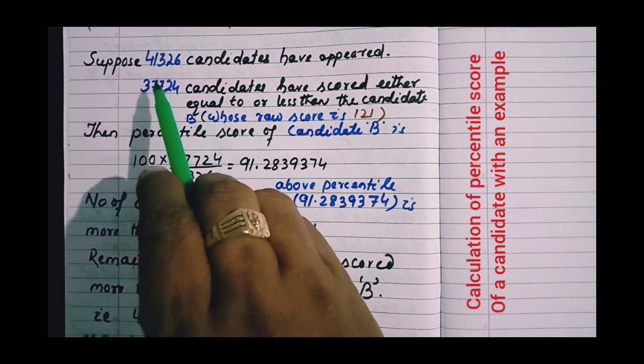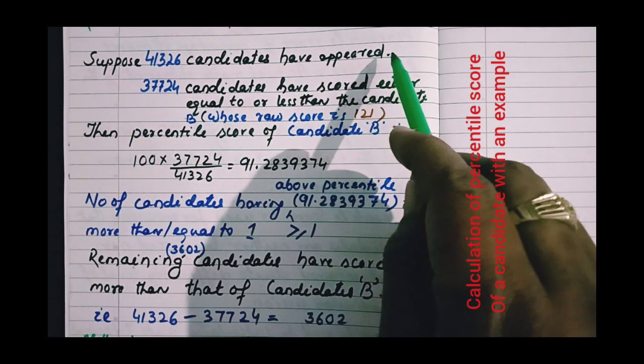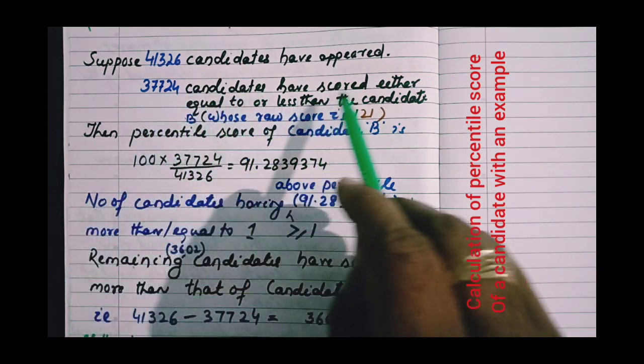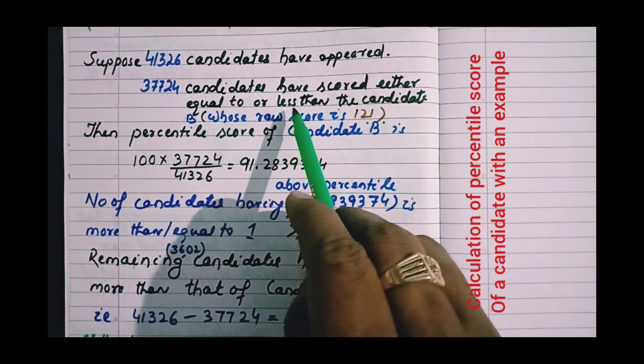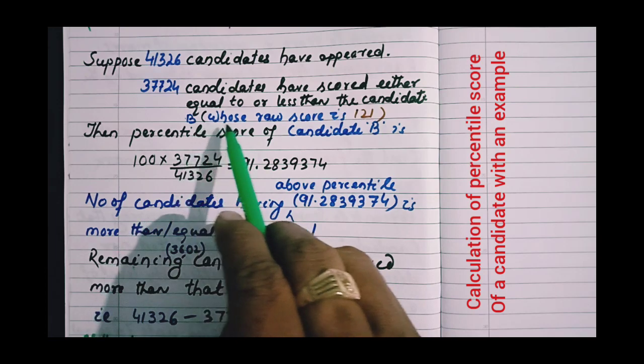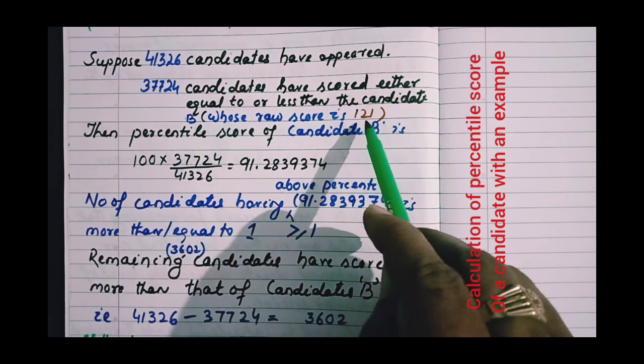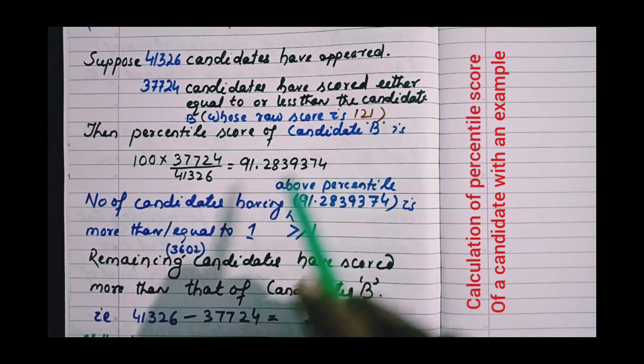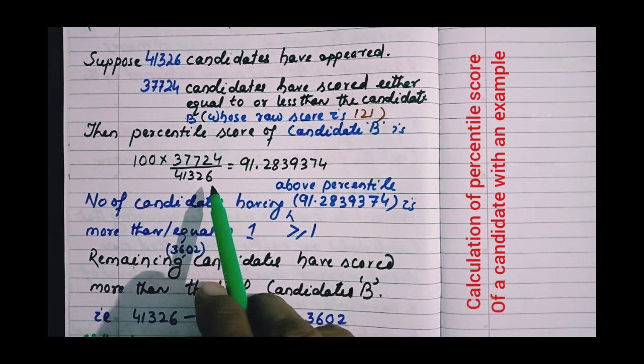Suppose 41,326 candidates have appeared in one session. 37,724 candidates have scored either equal to or less than candidate B, whose raw score is 121. Then the percentile score of candidate B can be found as shown here.